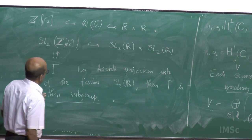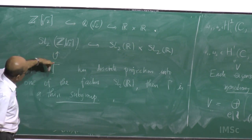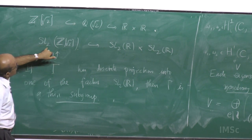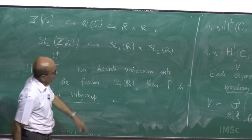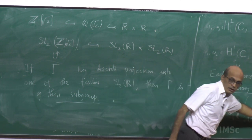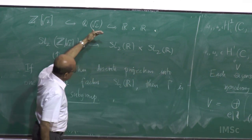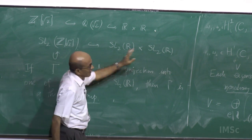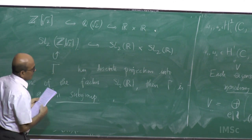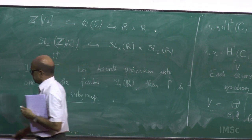If gamma has discrete projection into one of these factors, then gamma is a thin subgroup. It cannot have finite index because as soon as it has finite index, projections will be dense. So what they do is get the monodromy group as a subgroup of such a product and show that one of the projections is in fact dense.